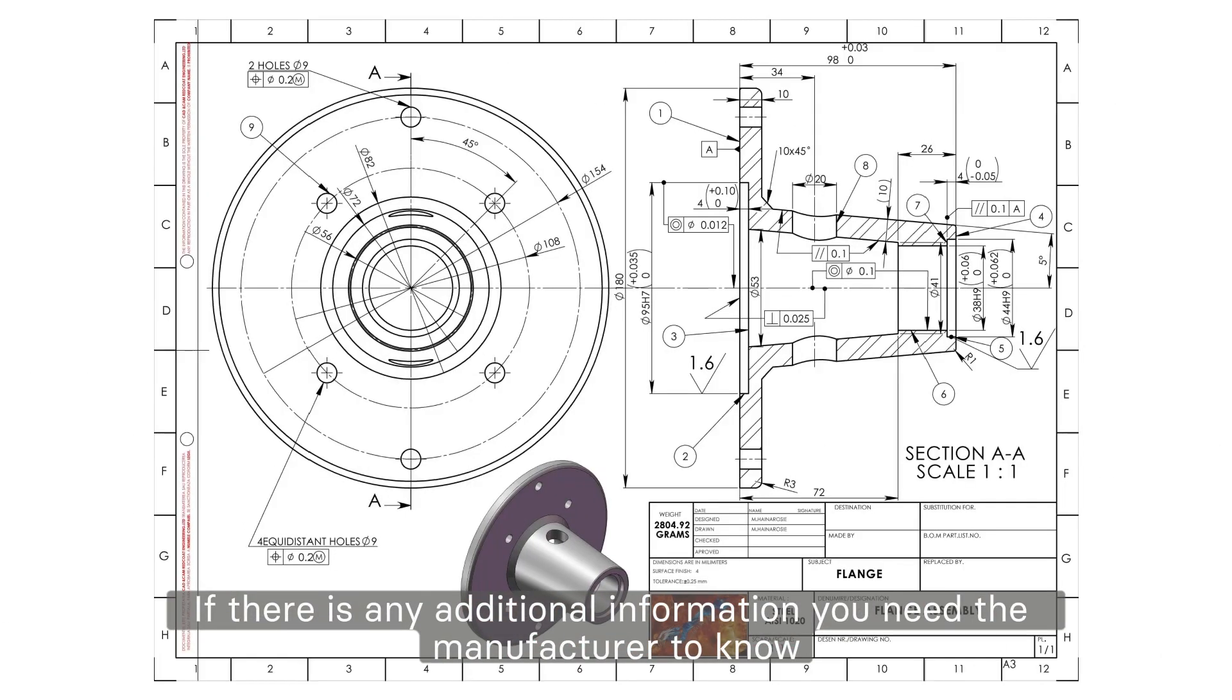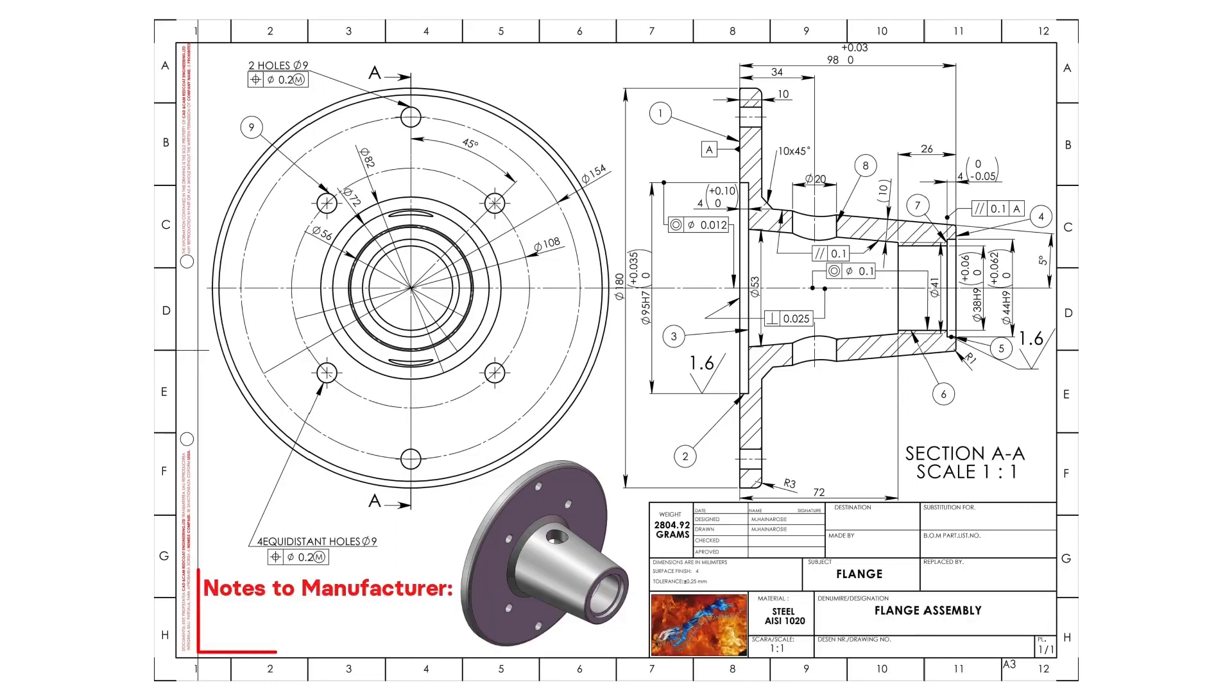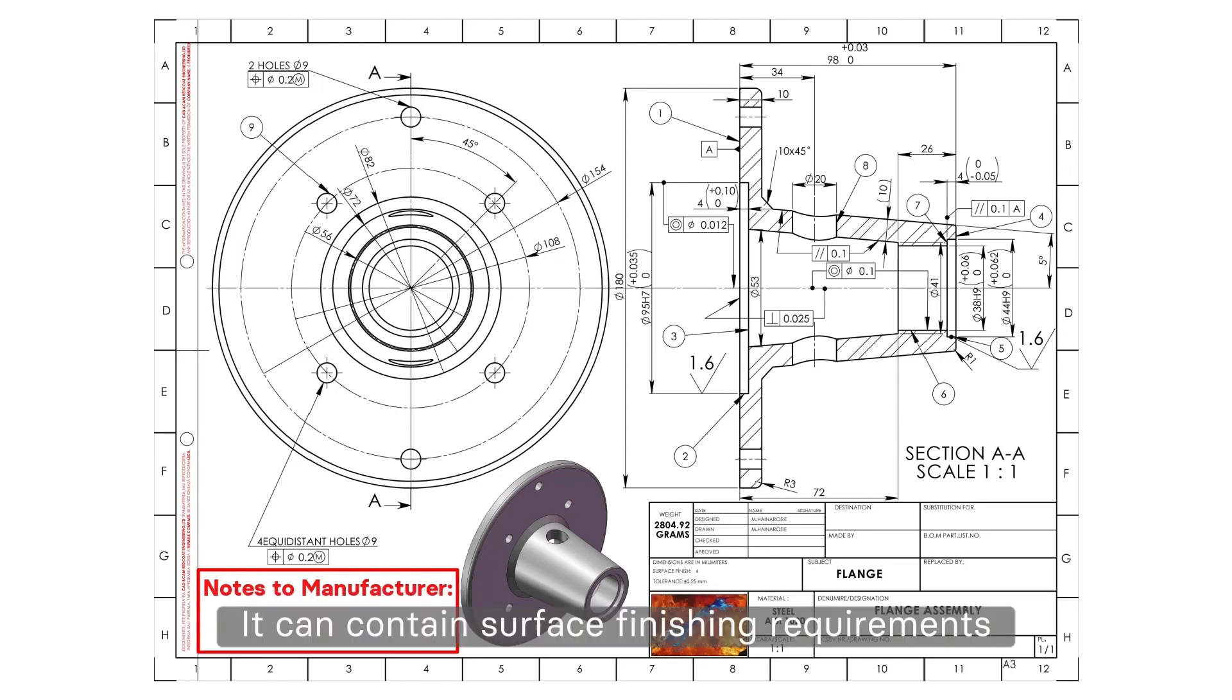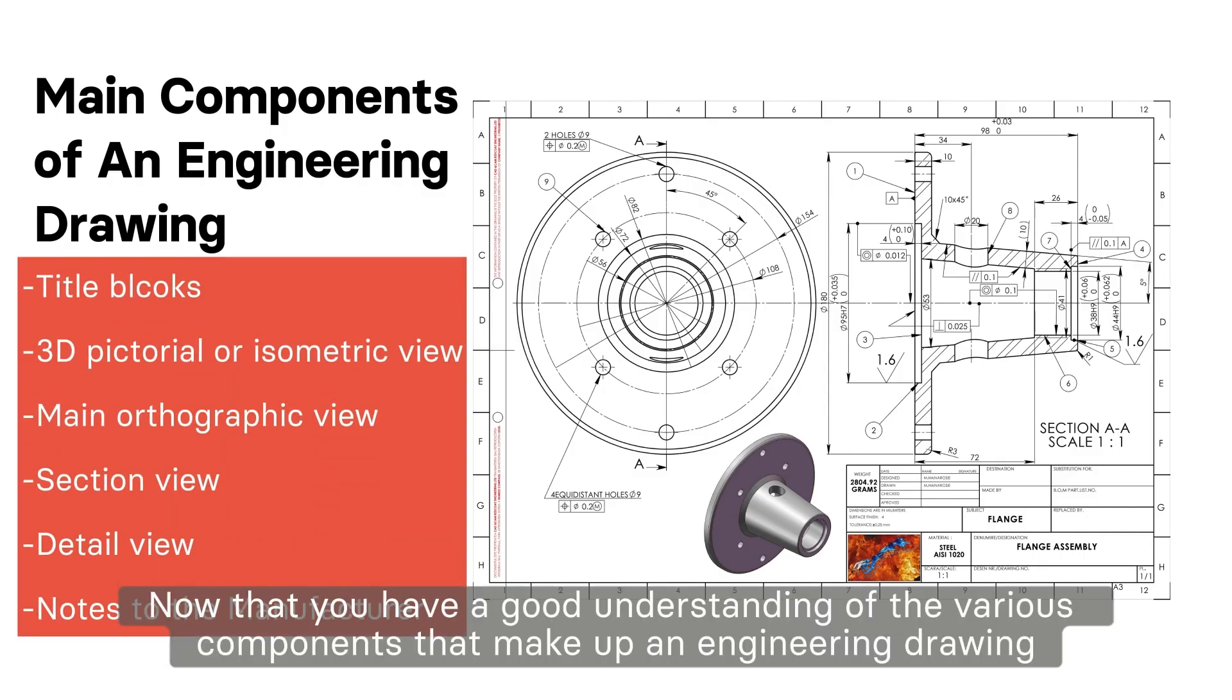If there is any additional information you need the manufacturer to know, you can include this in the notes to the manufacturer section. It can contain surface finishing requirements, instructions to deburr sharp edges, and more. Now that you have a good understanding of the various components that make up an engineering drawing, it's essential to learn some tips that can help you create even better drawings.